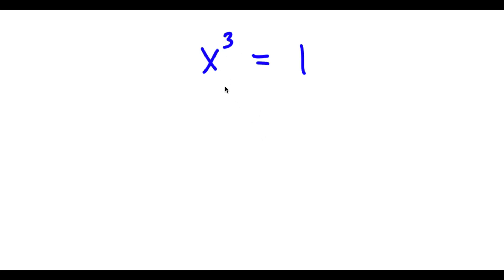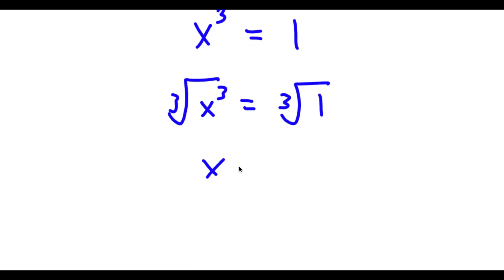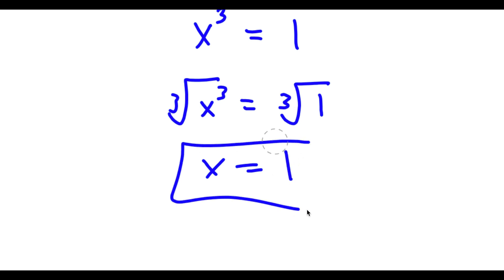In this problem, I have x to the power of 3 equals 1. I'm going to first start by taking the cube root on both sides. So I have the cube root of x to the power of 3, which is x, and the cube root of 1, which is simply equal to 1. So we already have one solution of x.